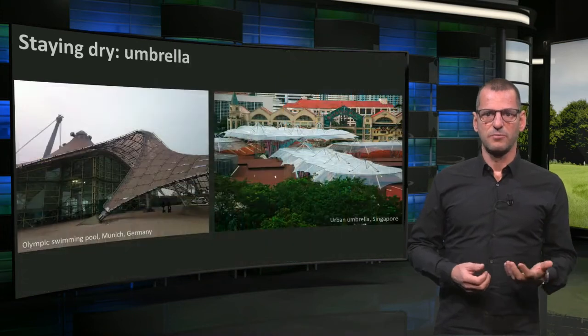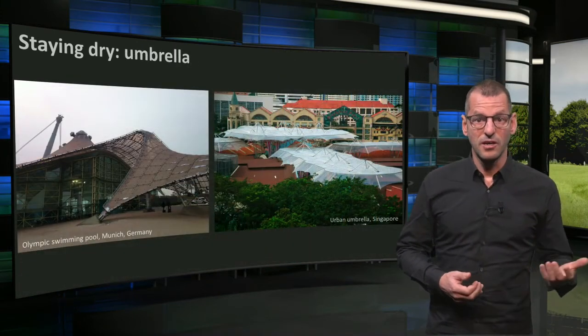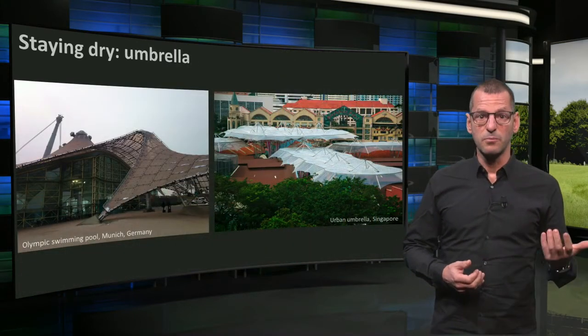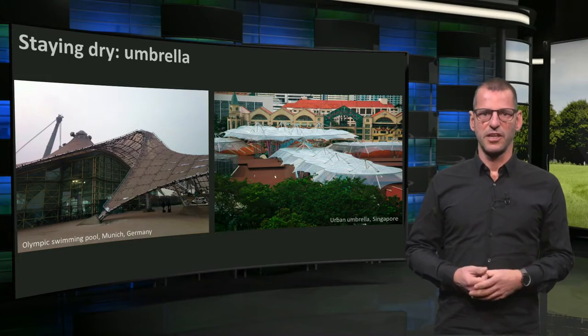Good detailing enables centuries-long usage of wood. Extreme protective measures against precipitation are nowadays found in complete umbrella structures, as you can see here.